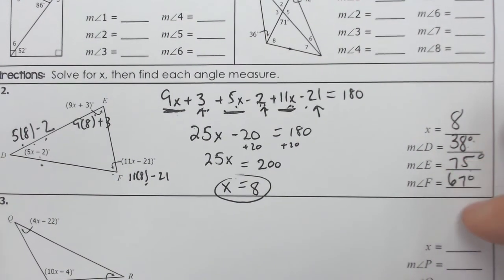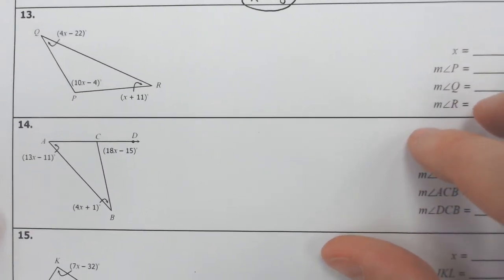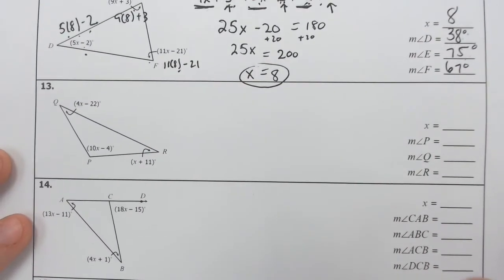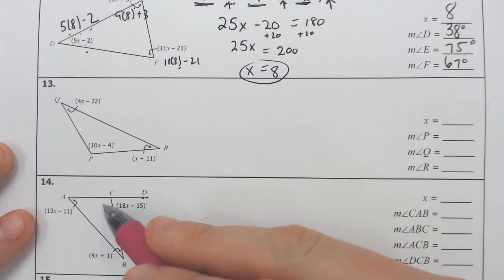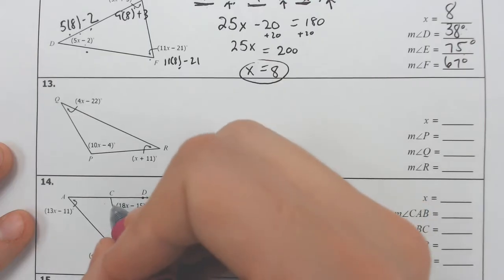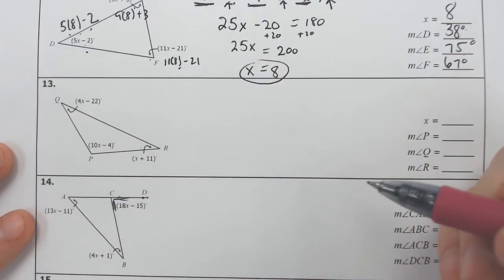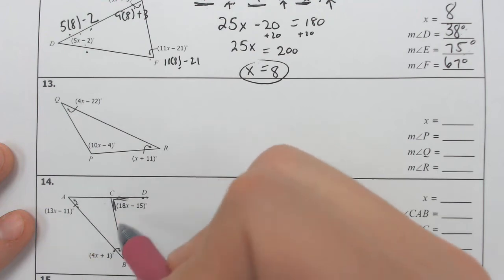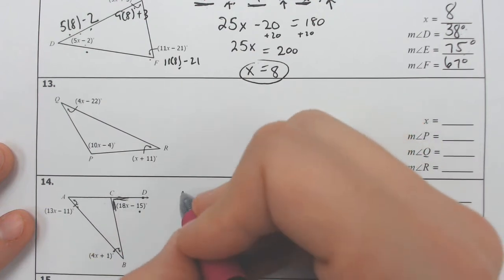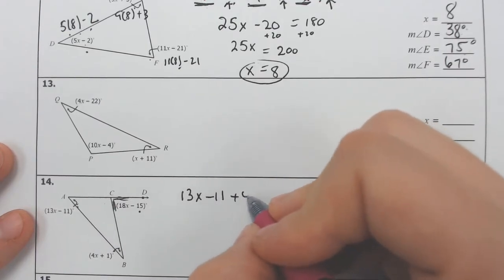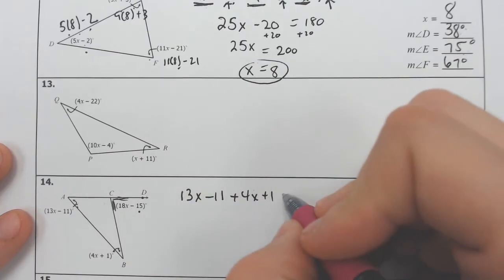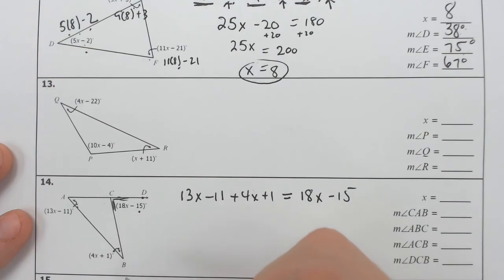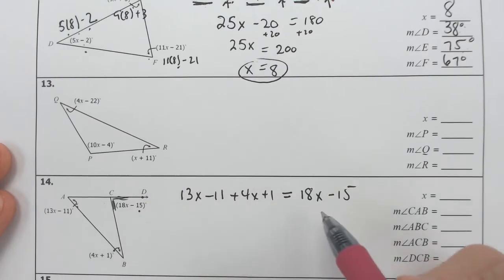The next problem that I plan on doing is number 14. So number 14, this one is a same sort of triangle problem, but instead of trying to find the inside angle, we want to find what x is, and we have an outside angle. So if it has an outside angle, we need to use the triangle exterior angle theorem, which is going to mean that we add these two together to equal one outside angle. So you add the insides, 13x minus 11, and the 4x plus 1, add the two inside parts to equal the outside. And the outside, the exterior angle, is 18x minus 15. So I combined these two together to equal the outside part.